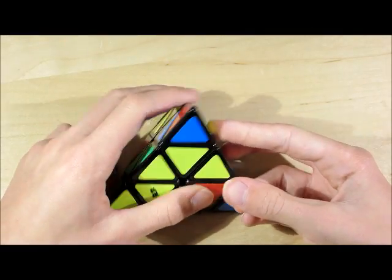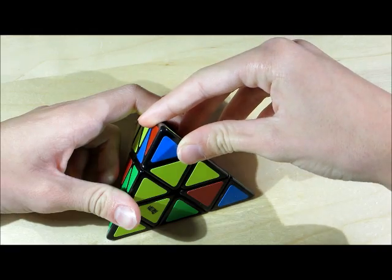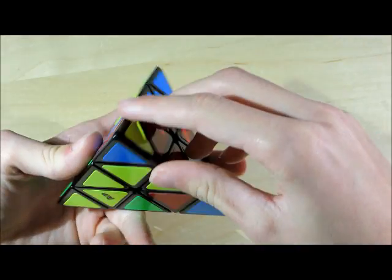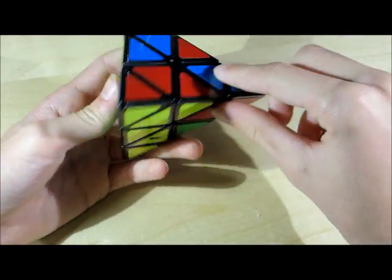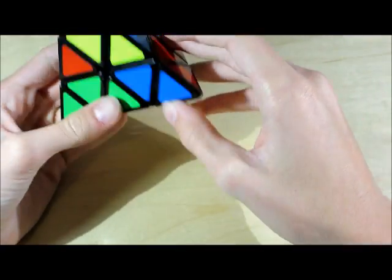So the first thing that we're going to want to do is solve these tips right here. Now it should be very obvious how you solve the tips. You just turn it until it becomes solved with the pieces right here. So that part is very easy.